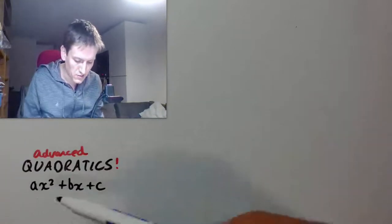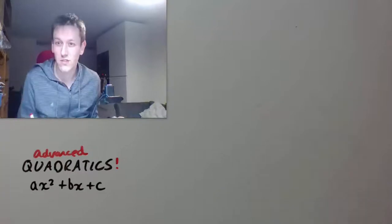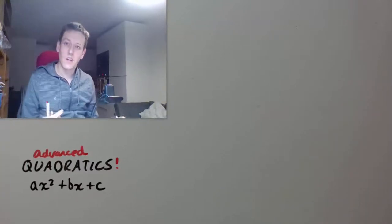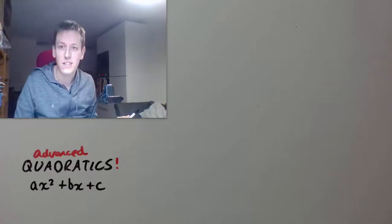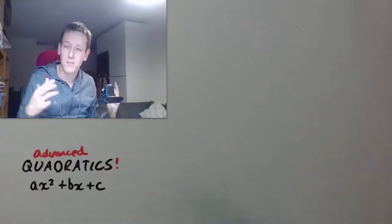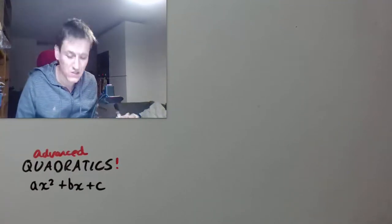So we're used to having quadratics with numbers in them. We've used the equation, completing the square, factorising, I'm going to assume. And we're going to use all of those techniques to talk about these quadratics in general. So the first thing I'm going to do, because it's the most informative way to view a quadratic, is to complete the square.